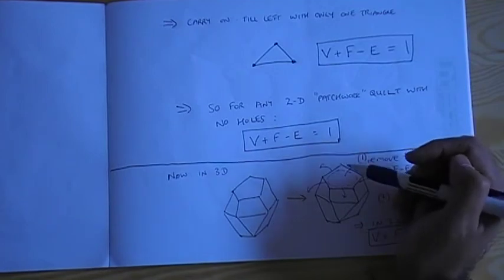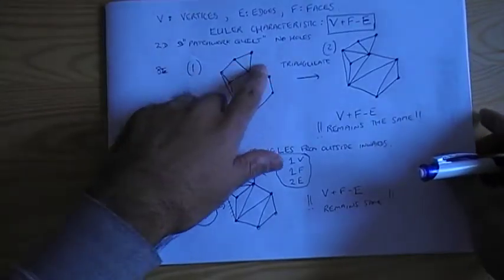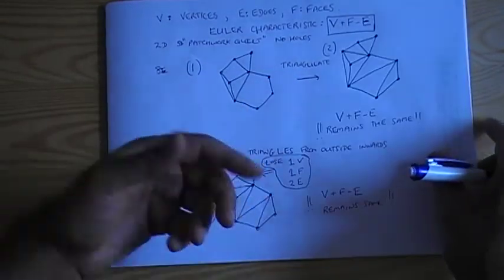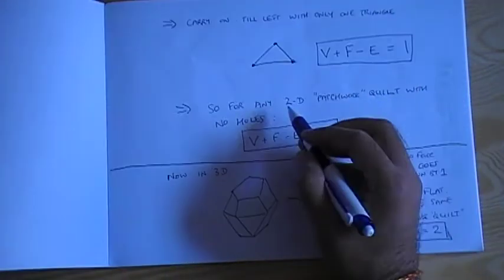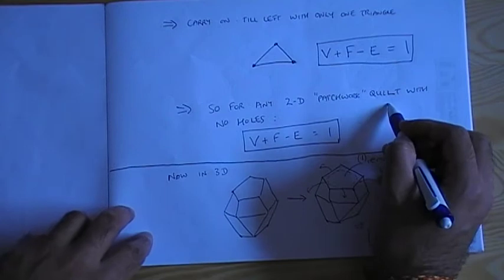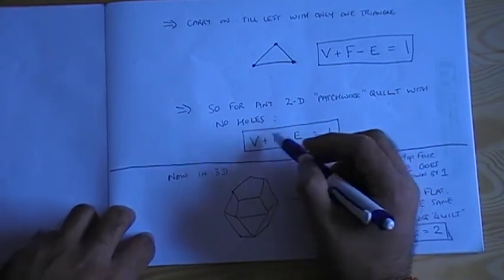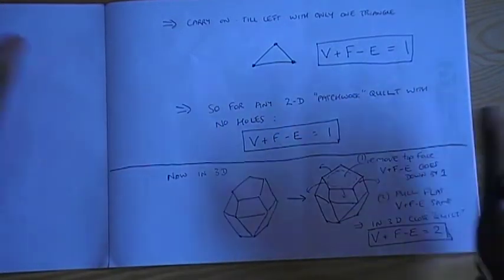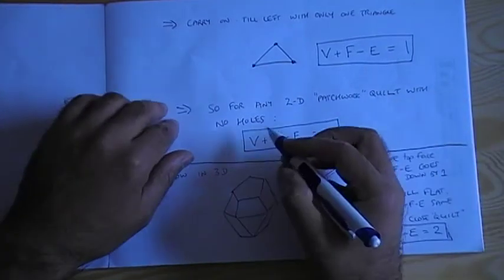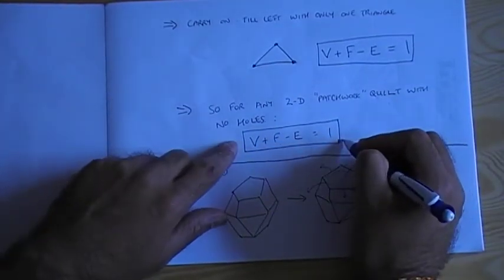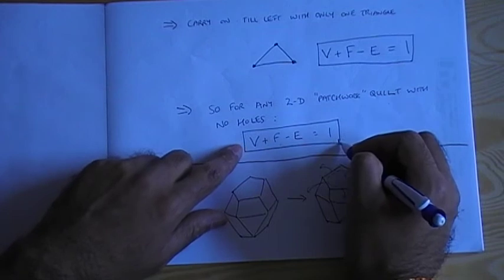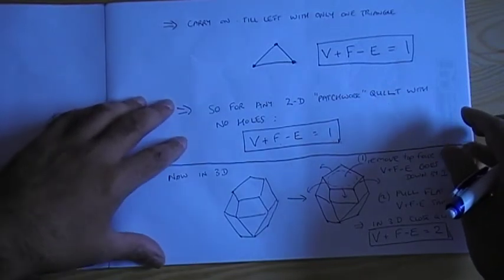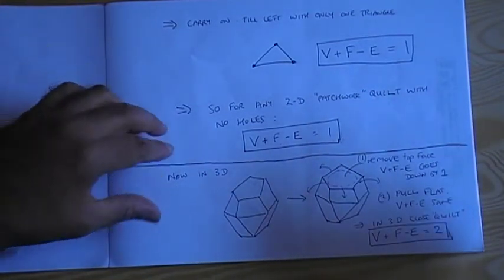So this argument means that to actually calculate V plus F minus E for this whole patchwork quilt, we don't actually have to go and count them all up. We know that for any two-dimensional patchwork quilt with no holes, V plus F minus E is equal to 1. And it doesn't matter how complicated the shape is, it doesn't matter how many patches there are, this will always be the case. So it's quite a remarkable and interesting pattern, which is not obvious when you think about the diverse range of quilts that you might have.